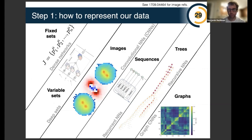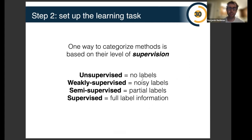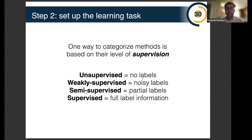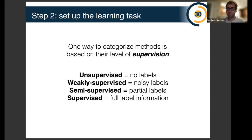That was my whirlwind tour of representations. The other task involved with training a machine learning algorithm is how to supervise it. Most machine learning you've probably heard about is supervised: you have labeled examples like pictures of cats and dogs, and you train a convolutional network to distinguish them. That's also true in high energy physics — we have simulations with signal and background and we classify them. But there are alternatives that use less information. Unsupervised machine learning uses no label information whatsoever.